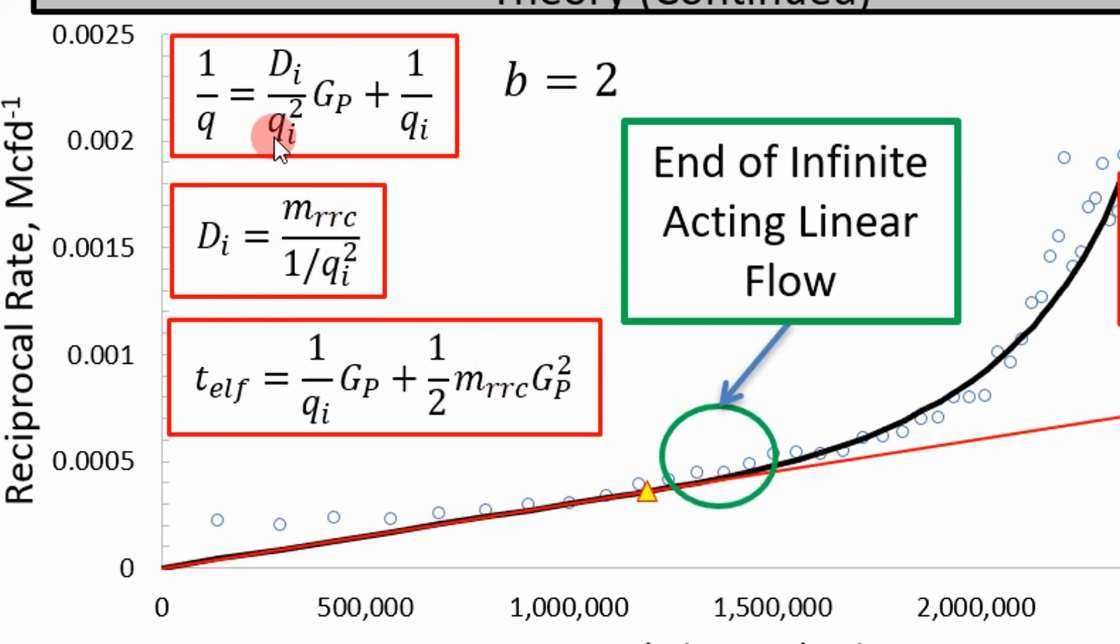and I can definitely share the derivation online if you guys want me to, but you can simplify the mathematics to get our initial rate at the initial production period right here equal to the slope. m is our slope over our 1 over initial rate squared. And in addition, you're also going to need this equation right here, which is the time to the end of linear flow, which is simulated by this triangle or shown here by this triangle.